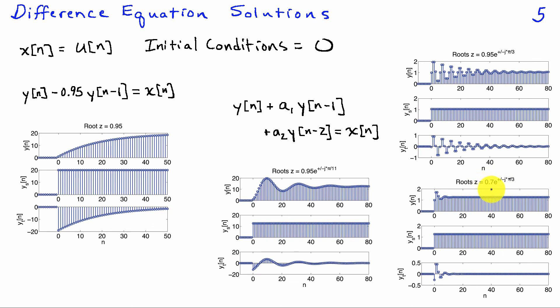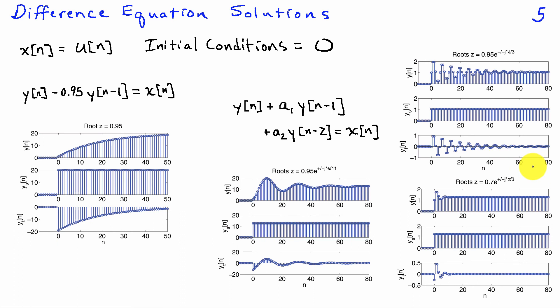Moving the roots to 0.7 e^(±jπ/3): the oscillation frequency stays the same as the previous case (π/3 phase), but with magnitude 0.7 the response decays much more quickly than 0.95^n. The transient response decays to 0 much faster. In summary, the locations of the roots of the characteristic equation — principally their magnitudes and phases — tell us a great deal about the transient response, while the steady-state response takes the same form as the input.